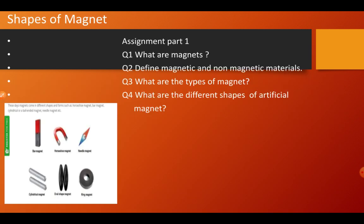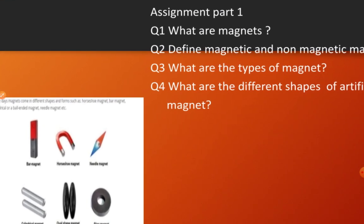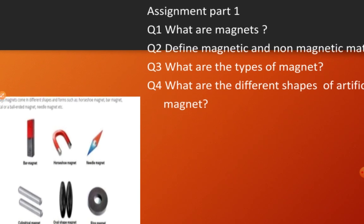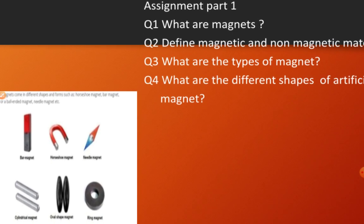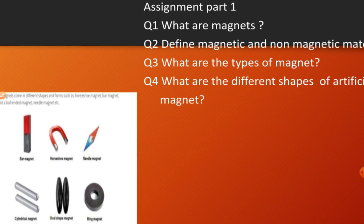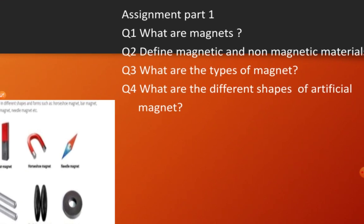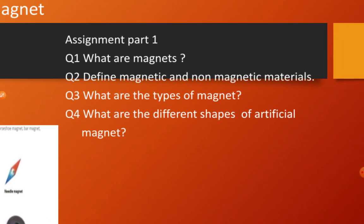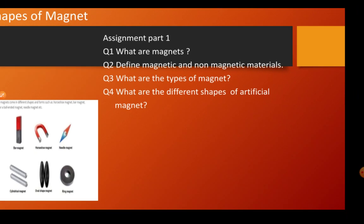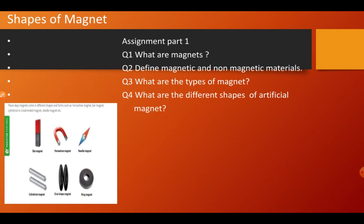The artificial magnets are available in different shapes: bar magnet, horseshoe shaped magnet, needle magnet, cylindrical magnet, oval shaped magnet, and ring magnet. Here is an assignment for you: What are magnets? Define magnetic and non-magnetic materials. What are the types of magnet? What are the different shapes of artificial magnets?